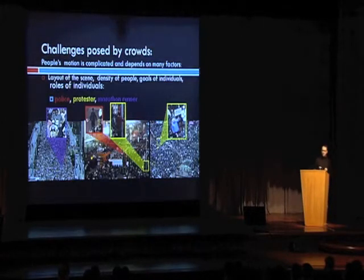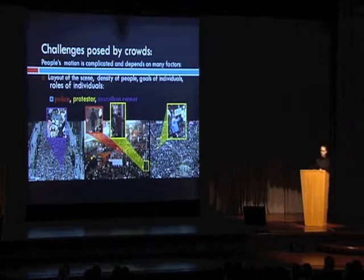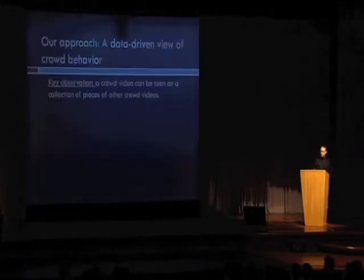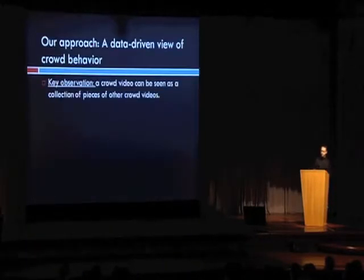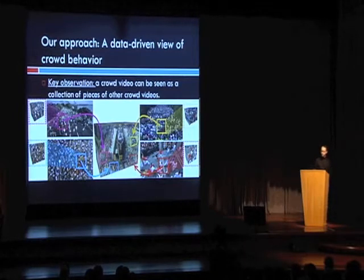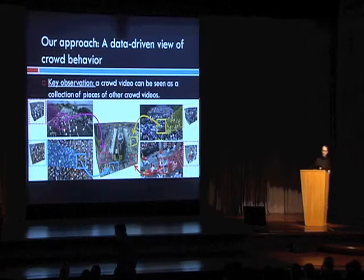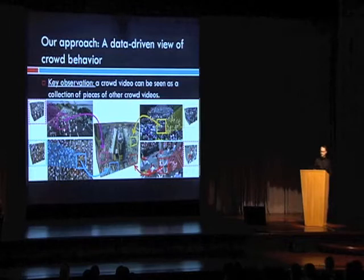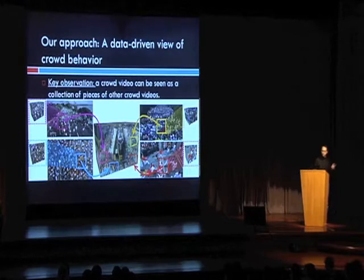Because explicitly modeling all these subtle aspects that determine the motion of a person within a crowd is very complicated, in this work we take a data-driven view of crowd behavior. This begins with the idea that any given crowd can be thought of as being a combination of previously observed crowds. More specifically, we want to explain an input video as a combination of space-time patches from many other videos, and we could then transfer pre-computed motion priors from those previously observed videos in order to assist us in tracking.